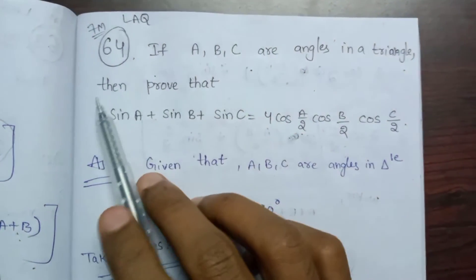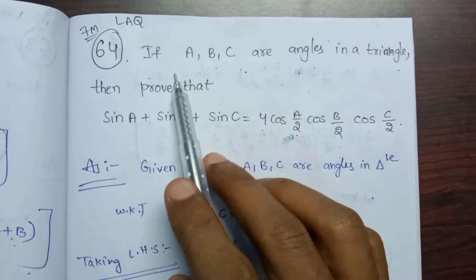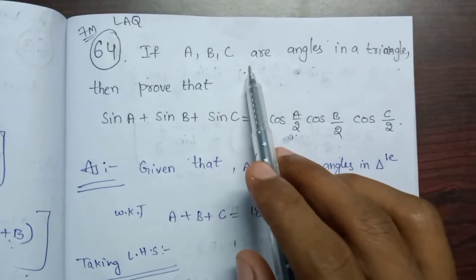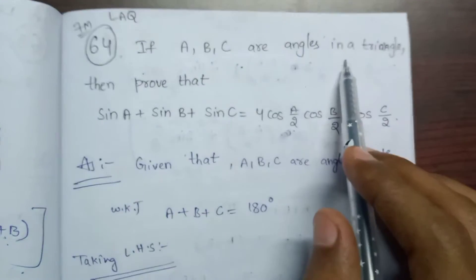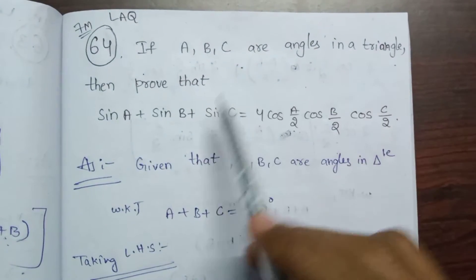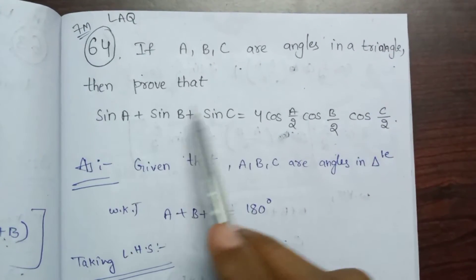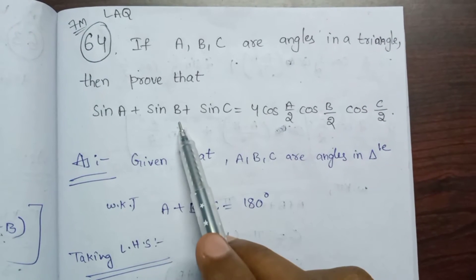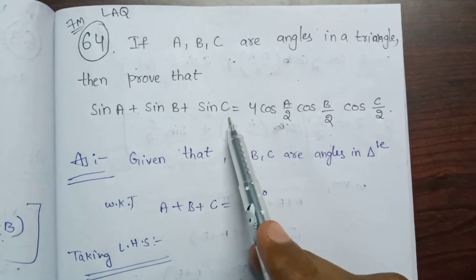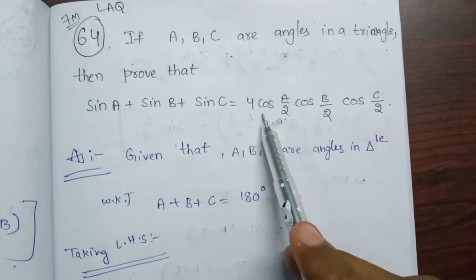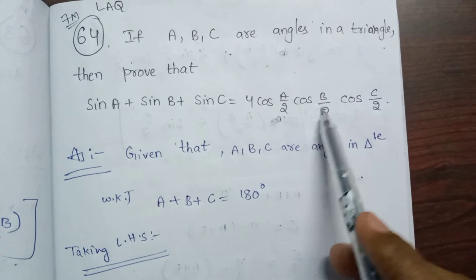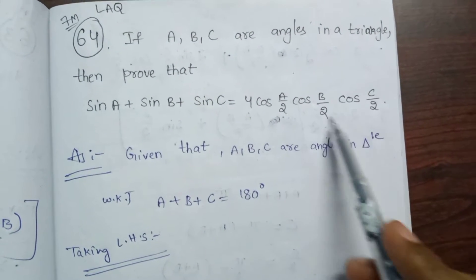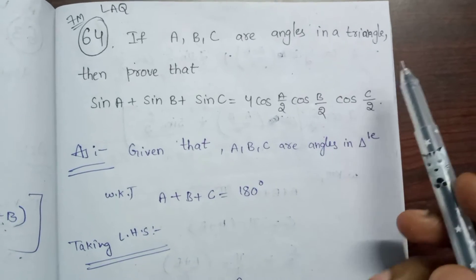Next problem is 64. If A, B, C are angles in a triangle, then prove that sin A plus sin B plus sin C is equal to 4·cos(A/2)·cos(B/2)·cos(C/2).